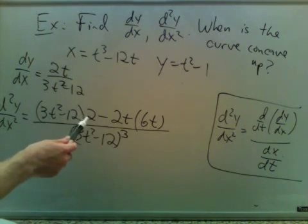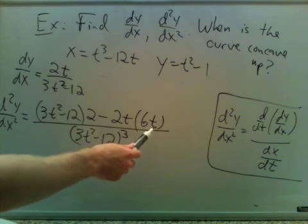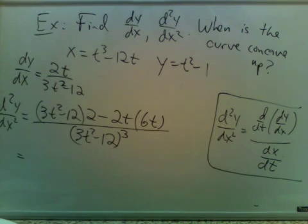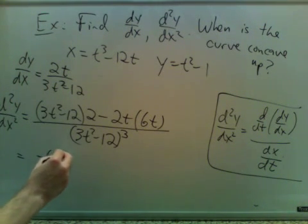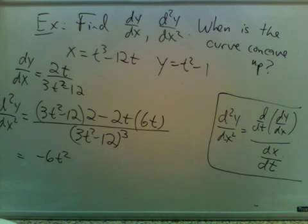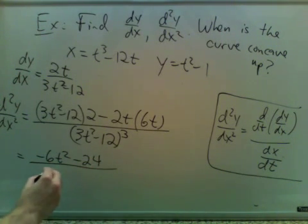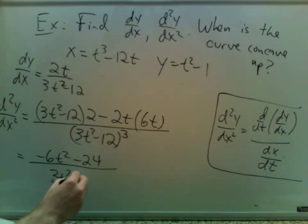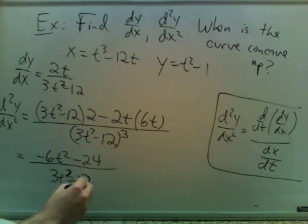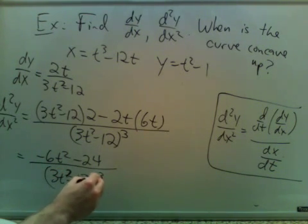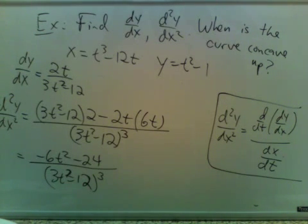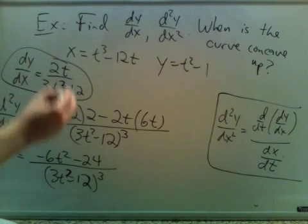Let's see if we can simplify. We get 6t squared minus 12t squared. So we get negative 6t squared minus 24. So that's the first part.